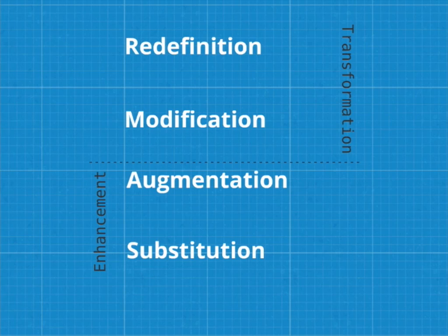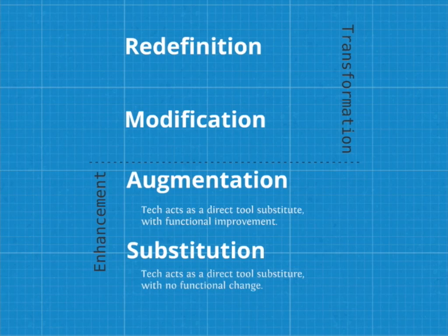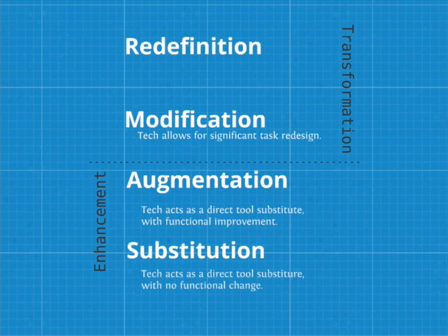The SAMR model looks at the different stages of how technology enables both enhancement through transformation of tasks. At the most basic level, the technology acts as a direct substitute with no functional change — for example, using maps on your iPad versus a paper map. When you integrate location awareness, it begins to augment the experience by adding functional improvement: it can show you where you are, update your movement in real time, provide information about nearby physical features and landmarks. When you start to bring in data relevant to that geographic context, you begin to move into the transformation and redesigning of the task. A traditional map would not have been able to give access to the vast amounts of geotagged virtual content that have evolved.